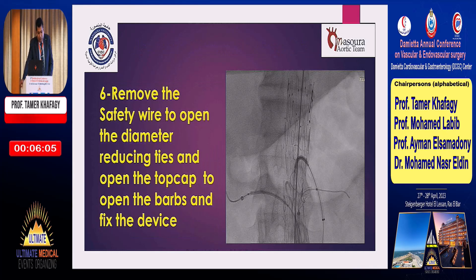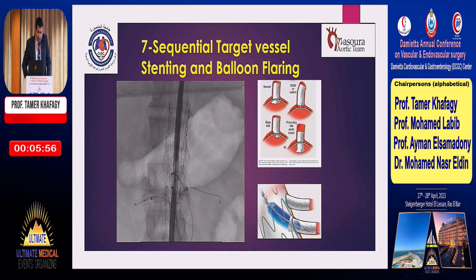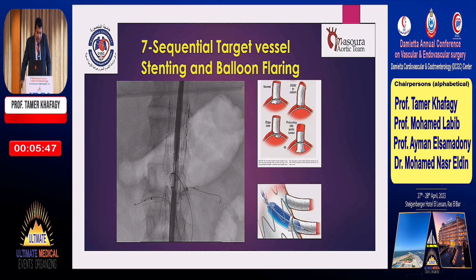We remove the stiff wire to open the diameter-reducing ties and open the top cap to deploy the barbs and fix the device. After fixation, we perform sequential target vessel stenting and balloon flaring — placing a stent inside each vessel, leaving about 4 to 5 millimeters of stent inside the aorta, then flaring it with a 10 millimeter balloon to fix it to the fenestration.